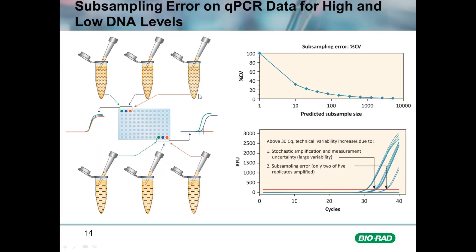Subsampling error is a major source of error that occurs when working with very low abundant cDNA or genomic DNA samples. In this example, we have three technical replicates that contain a large amount of the target, represented by dashed lines in each of these tubes. Each tube represents a technical replicate from the same biological sample pipetted into a qPCR plate. When there are a large number of target molecules, the data in the amplification curves is very consistent — all three amplification curves virtually overlap, as would be expected with technical replicates.